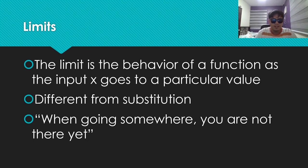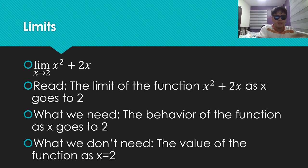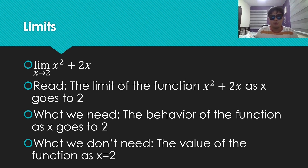Let's talk about limits. The definition of the limit is the behavior of a function as the input x goes to a particular value. When going somewhere, you're not there yet — that will be important later. This is a typical limit function. You can read this as the limit of x squared plus 2x as x goes to 2. What we need is the behavior of the function as x goes to 2. When x goes to 2, what does the function go to? We don't need the value of the function as x equals 2 exactly — it's not really substitution. We're trying to find out where it goes.